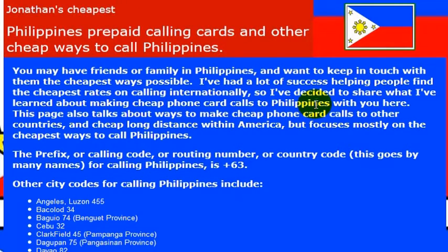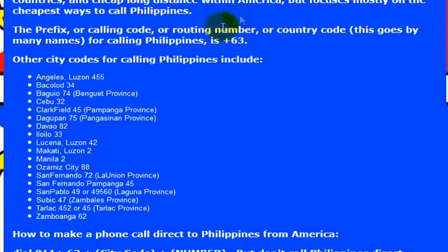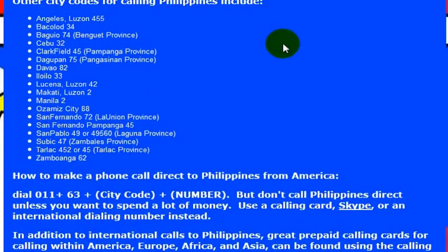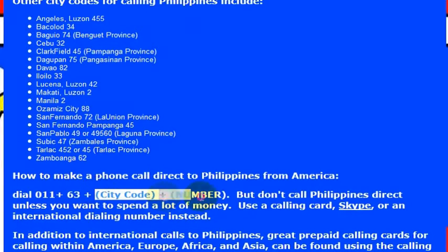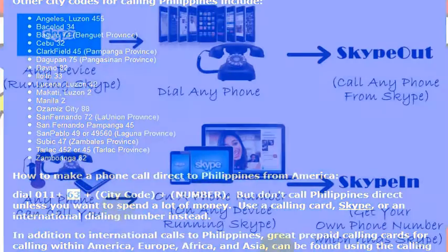If you want to call there directly, all you would need to do is dial the country code 63 after dialing the international calling code. This is calling from the United States, so if you're calling from the US you would dial 011, then 63 — the country code for the Philippines — and then the rest of the phone number. Again, the country code for the Philippines is 63.